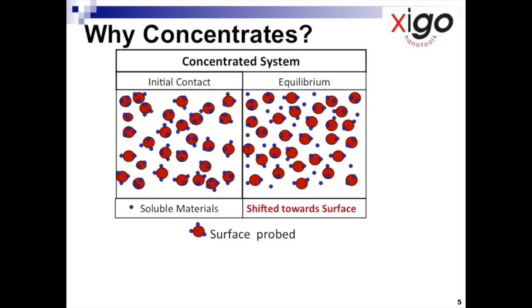So in concentrated suspensions, the equilibrium is always shifted towards the surface, and the little icon at the bottom represents the surface probed by any characterization technique.